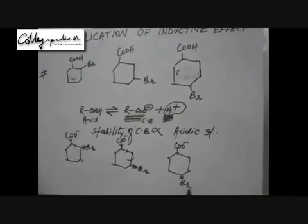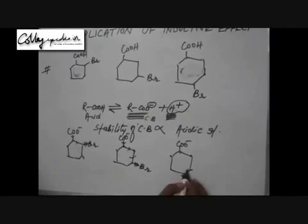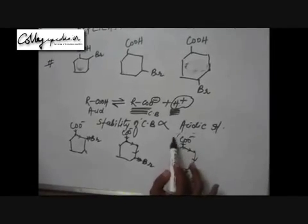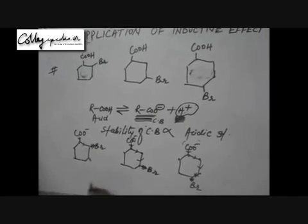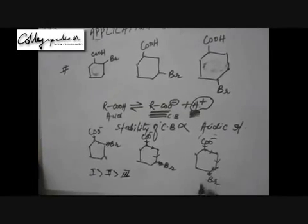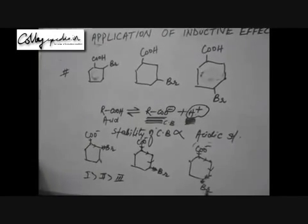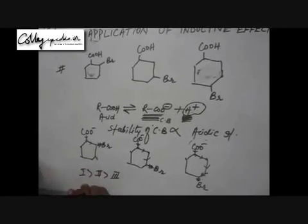In the third case, bromine is at the para position. From the para position, the inductive effect is negligible — we do not take it into account because it becomes very weak after passing through four bonds before reaching the carboxylate group. So inductive effect is distance dependent: the farther the bromine atom is from the carboxylate ion, the lesser its electron-attracting capability and the lesser its -I effect. If the conjugate base is less stable, the acid has less acidic strength.